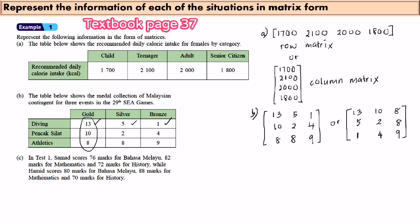These are square matrices. Why do we call it a square matrix? A square matrix has the same number of rows and columns. So here we have three rows and three columns.